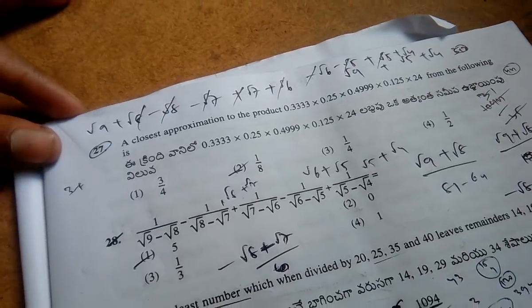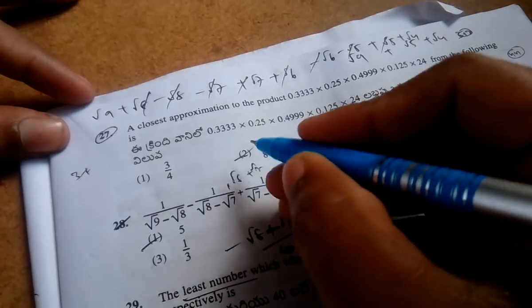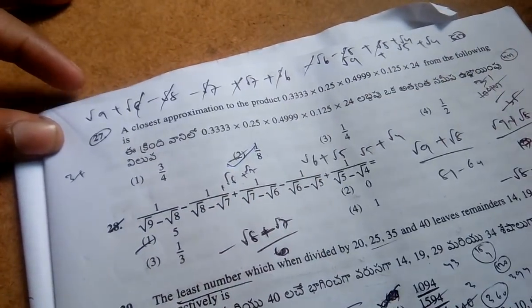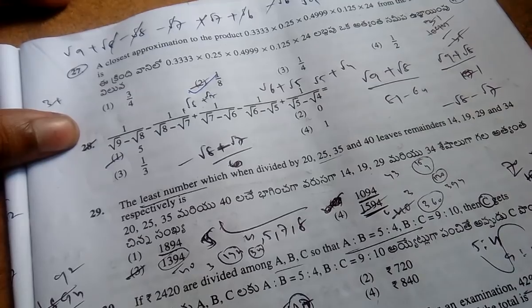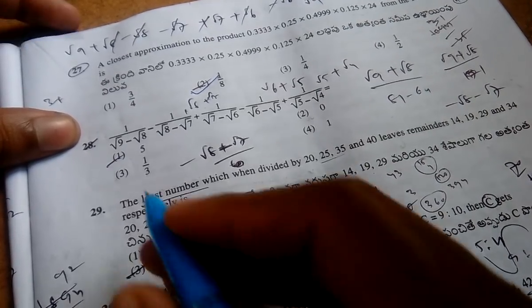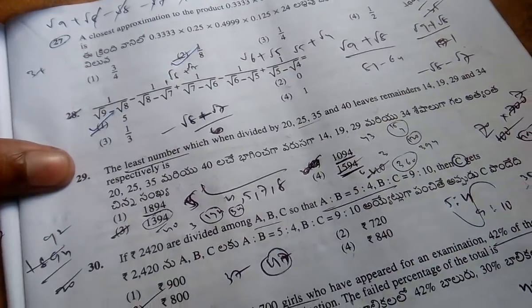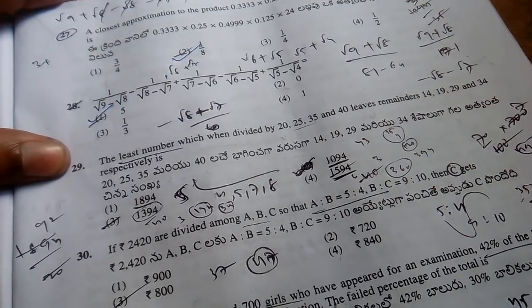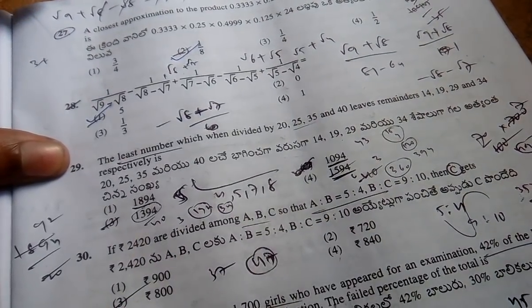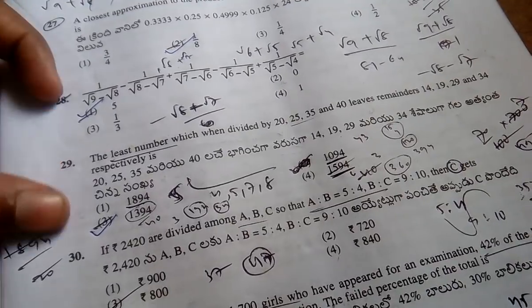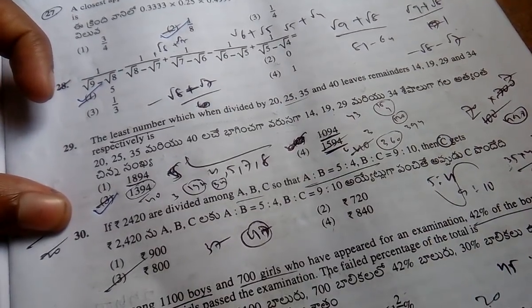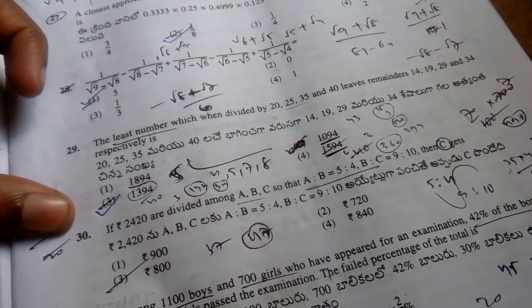Question 27 answer is 1 by 8. Question 28 answer is 5. Question 29 answer is 1394, so option 3 is the answer. Question 30 answer is 3.